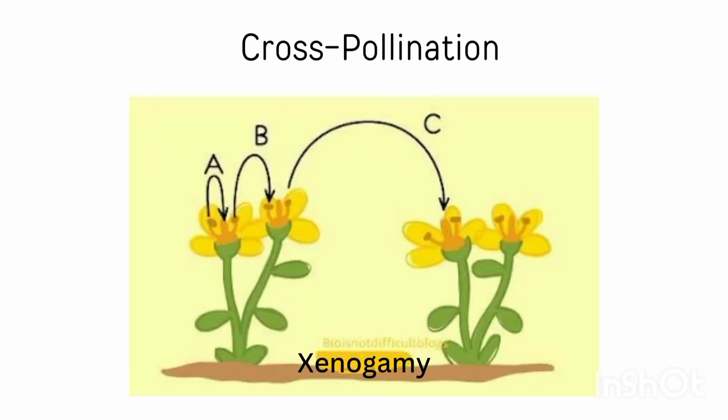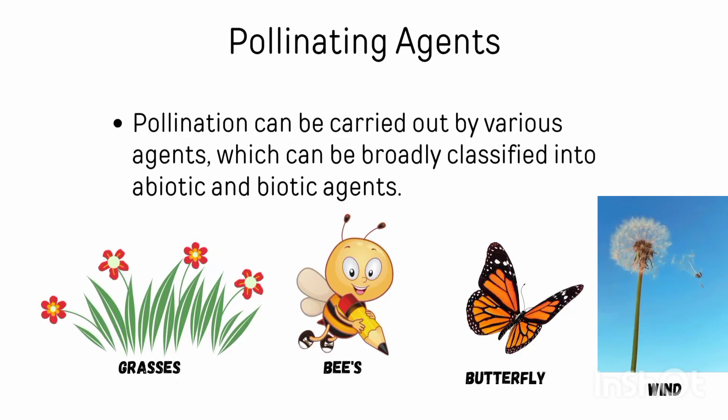Plant A and Plant C represent xenogamy. Now the last topic is pollinating agents. Pollination can be carried out by various agents, which can be broadly classified into abiotic and biotic agents. Examples include grasses, bees, butterflies, and wind.